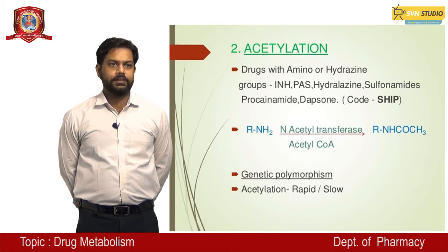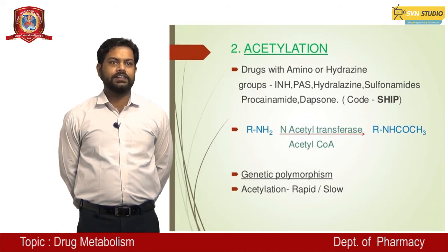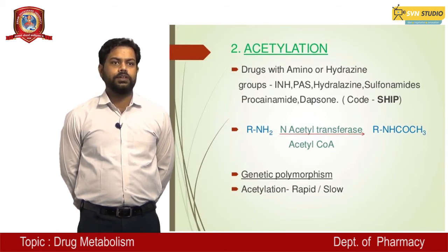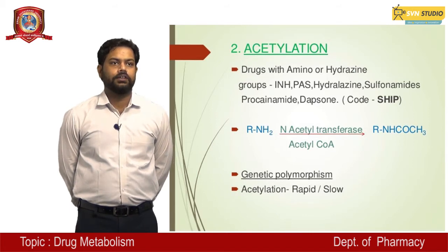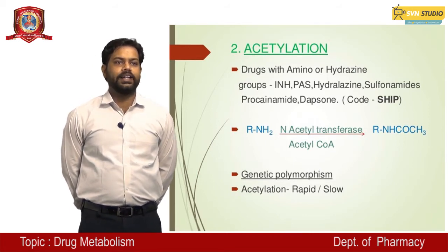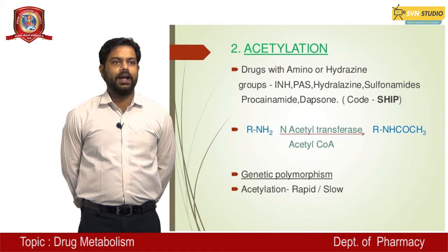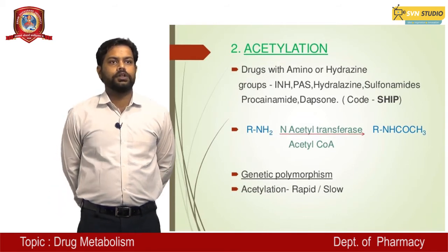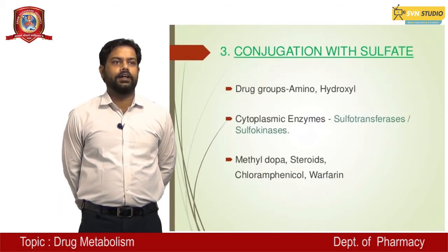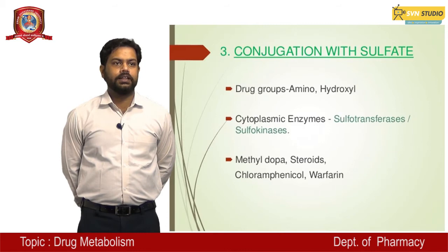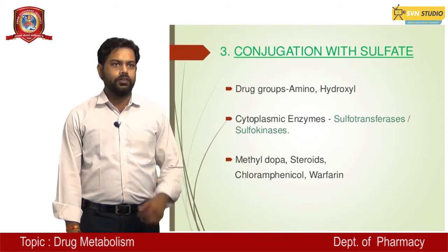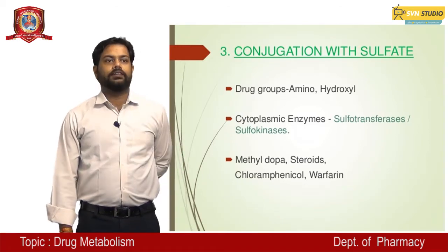Acetylation: drugs with amino or hydrazine groups — examples include INH, PAS, hydralazine, sulfonamides, procainamide, and dapsone. Genetic polymorphism in acetylation means metabolism may be rapid or slow. Conjugation with sulfate: drug groups include amino, hydroxyl — examples include methyldopa, steroids, and warfarin.